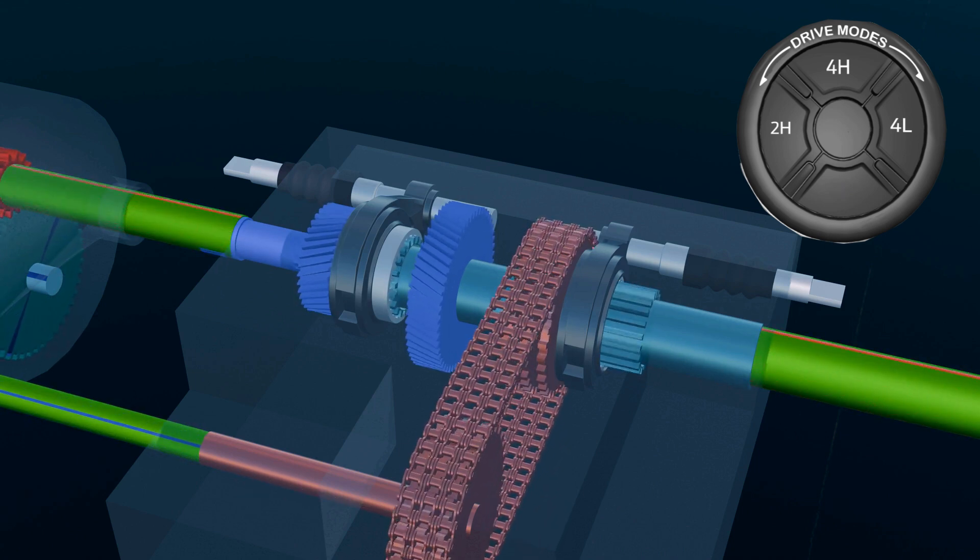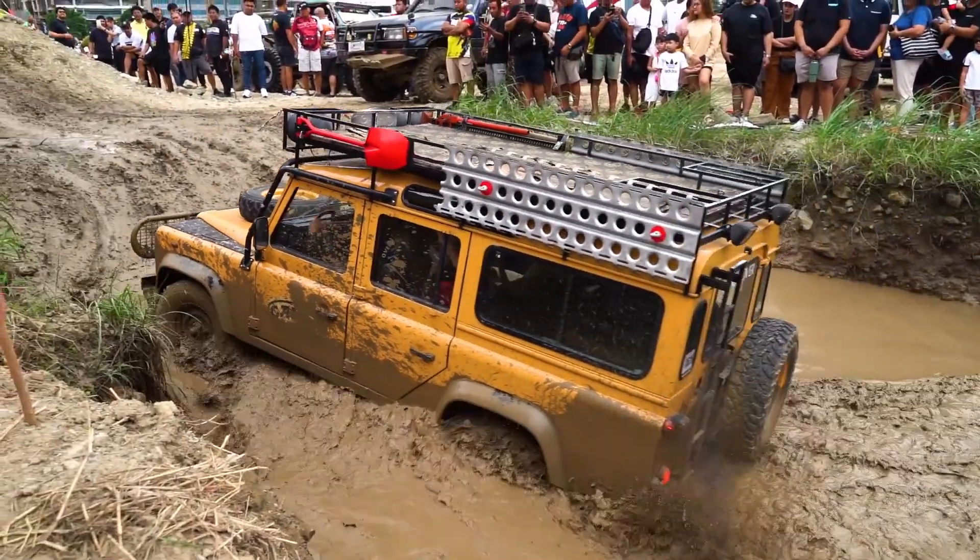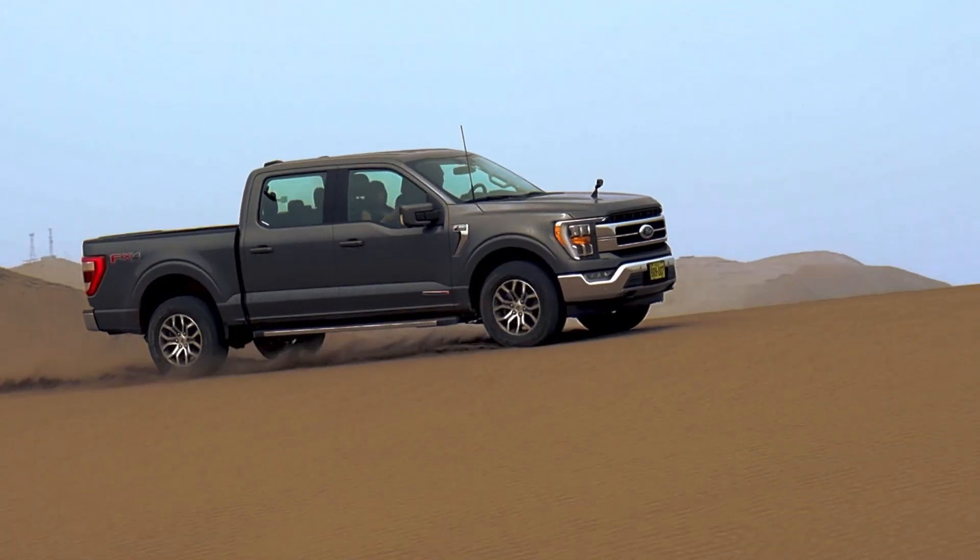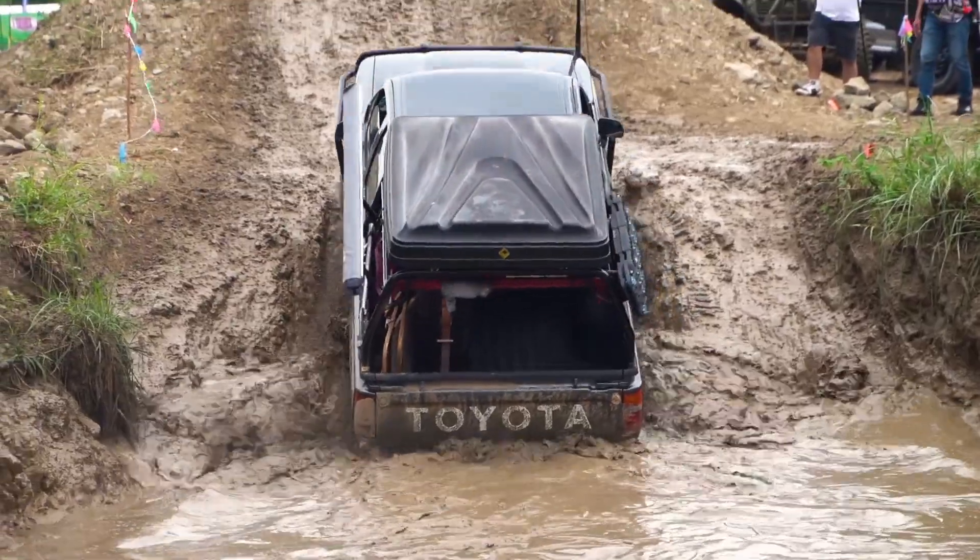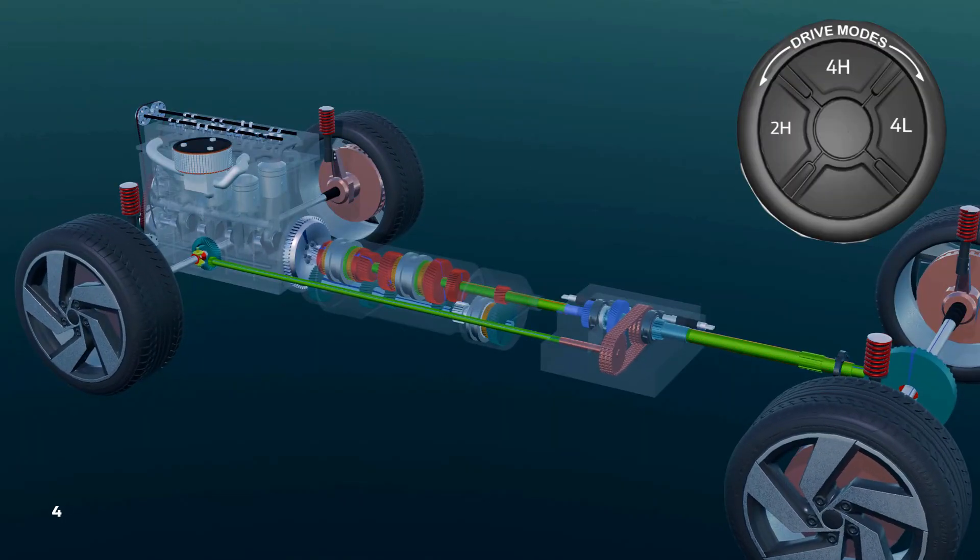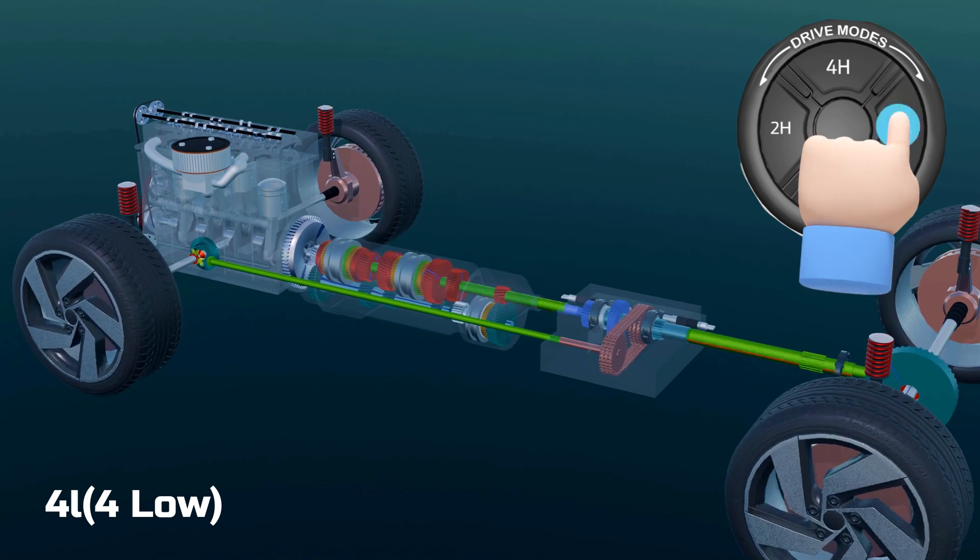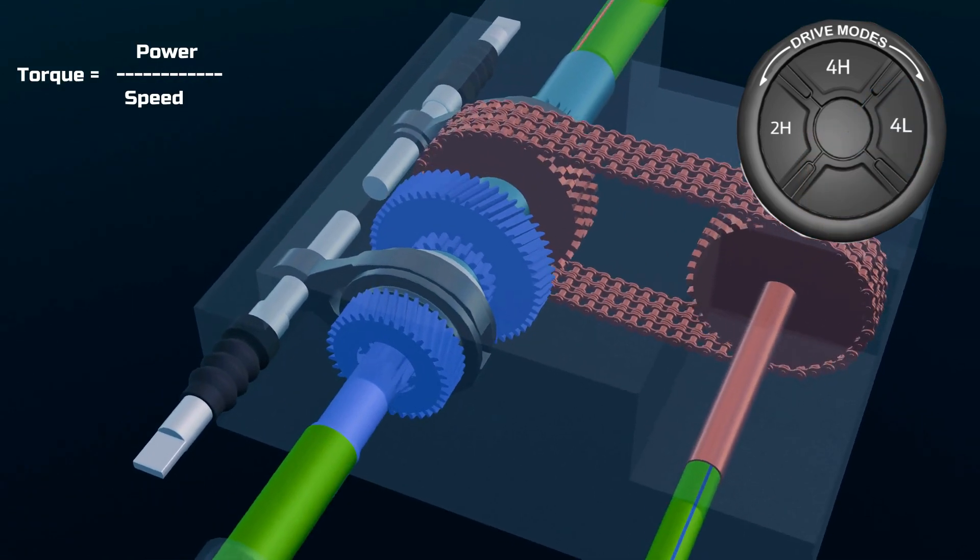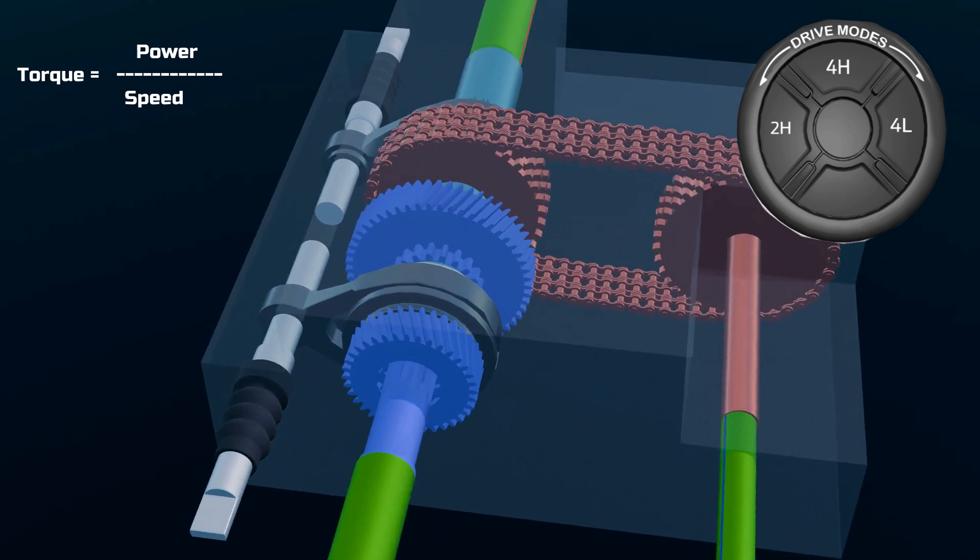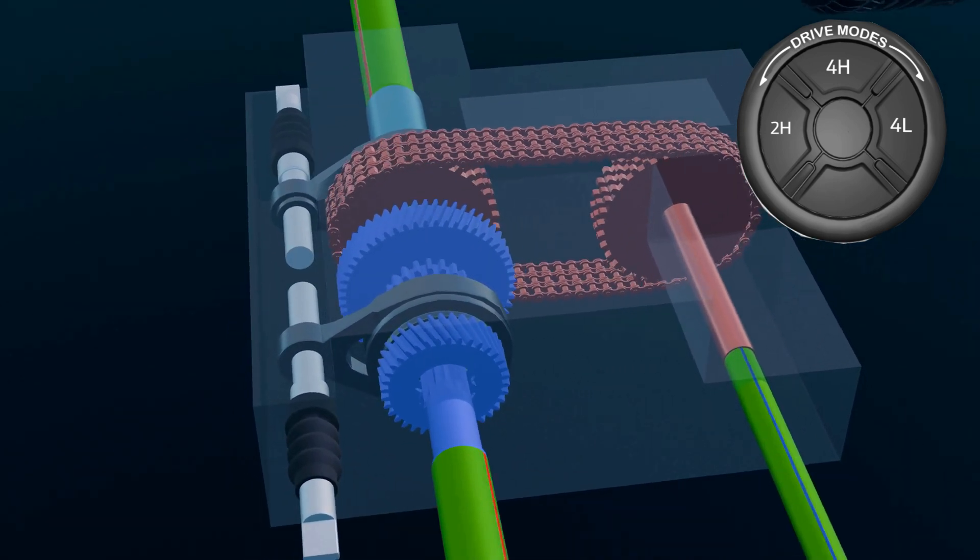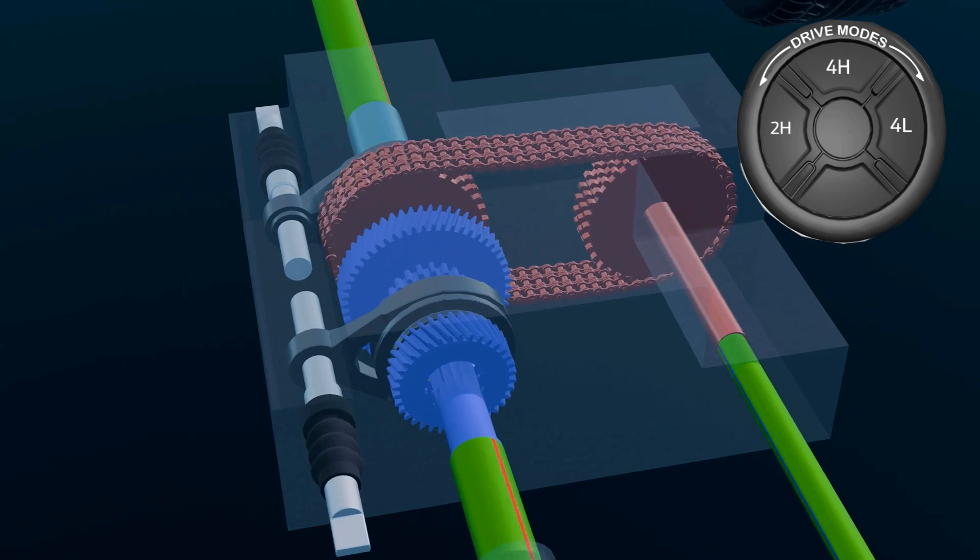However, for extreme off-road conditions, more torque is required. In 4H mode, speed is high, but torque is limited, making it insufficient for very rugged terrains. That's why a third mode called 4L or four-wheel low is introduced. As you might know, torque and speed share an inverse relationship. By reducing speed, we can increase torque. To boost torque, an additional gear set is included in the transfer case.